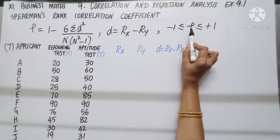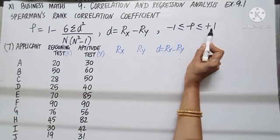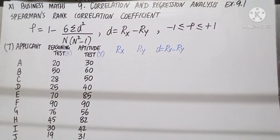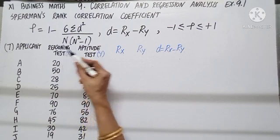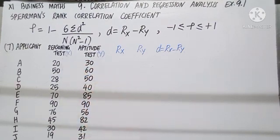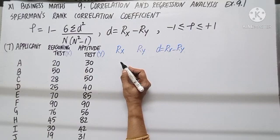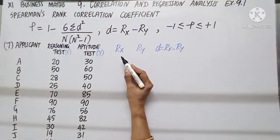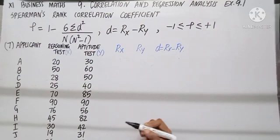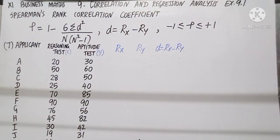Rho also lies between minus 1 and plus 1. Now, given a problem with applicants' names, reasoning test marks, and aptitude test marks, let us give the ranks. You can allot the ranks in ascending or descending order. Let us choose ascending order.